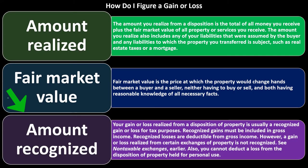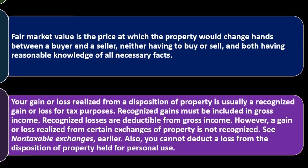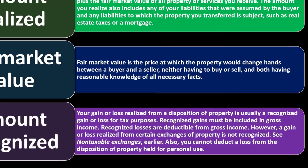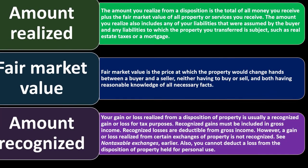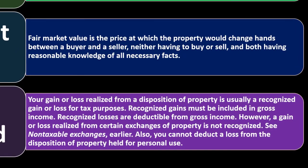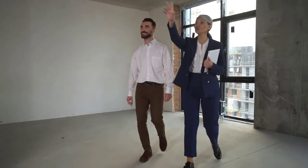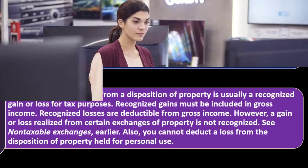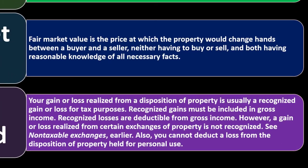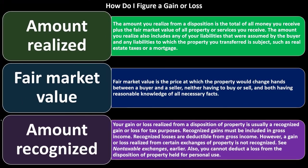Amount recognized: your gain or loss realized from a disposition is usually a recognized gain or loss for tax purposes. Recognized gains must be included in gross income; recognized losses are deductible from gross income. However, a gain or loss from certain exchanges is not recognized — see the non-taxable exchanges discussion. Also, you cannot deduct a loss from the disposition of property held for personal use. We're talking about business property to get the deduction — if you sold your personal TV at a loss, you don't get a deduction.